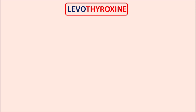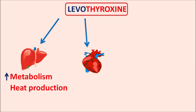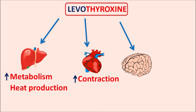Levothyroxine acts as a thyroid supplement, increasing the activity of thyroid hormones on different organs. In the liver, it increases metabolism and basal metabolic rate, leading to increased heat production. In the heart, it increases contraction and cardiac output. In the central nervous system, it controls mental state and increases alertness under normal levels; at excessive levels it can cause anxiety, agitation, and irritability. It also influences nervous system development.